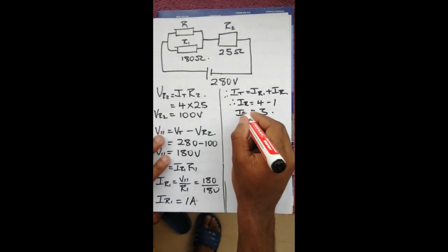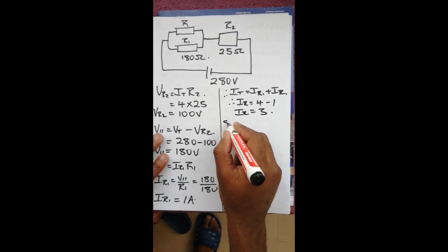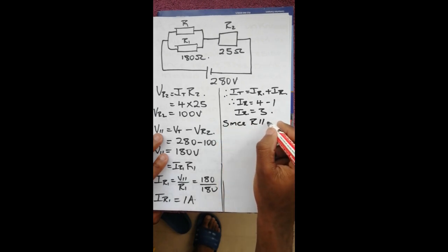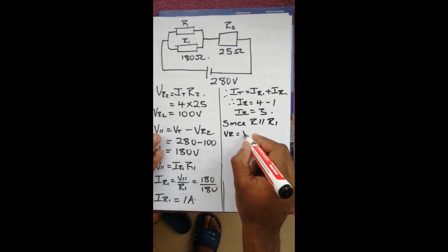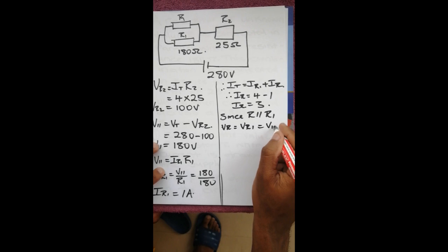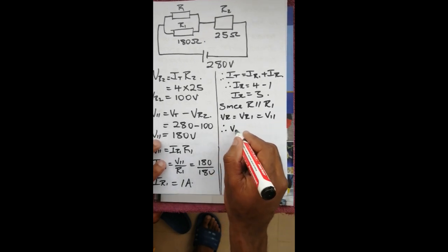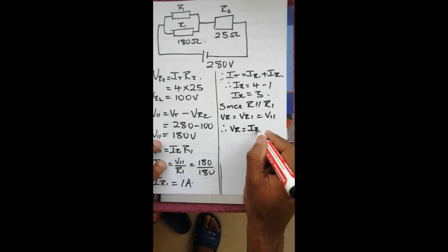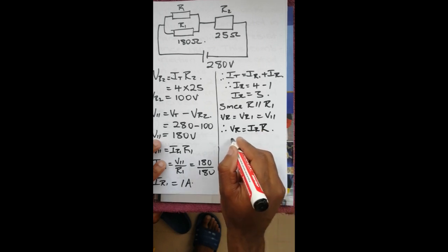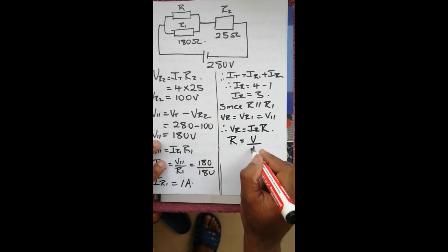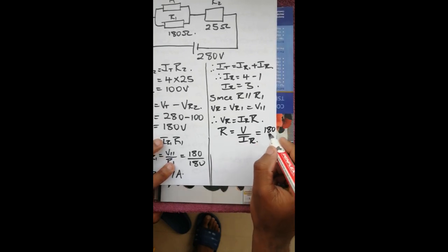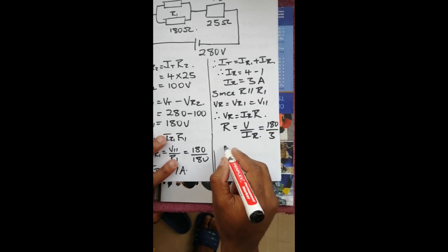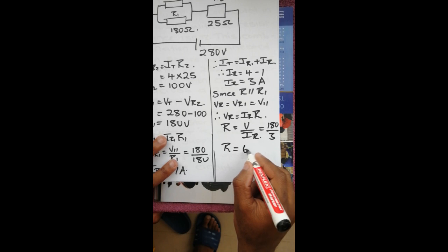Since R is in parallel with R1, V_R equals V_R1 equals V_parallel. Therefore, V_R equals I_R times R. Rearranging, R equals V over I_R. Our V is 180 volts and our I_R is 3 amps — derived from I_T minus I_R1, which is 4 minus 1. Therefore R equals 60 ohms.